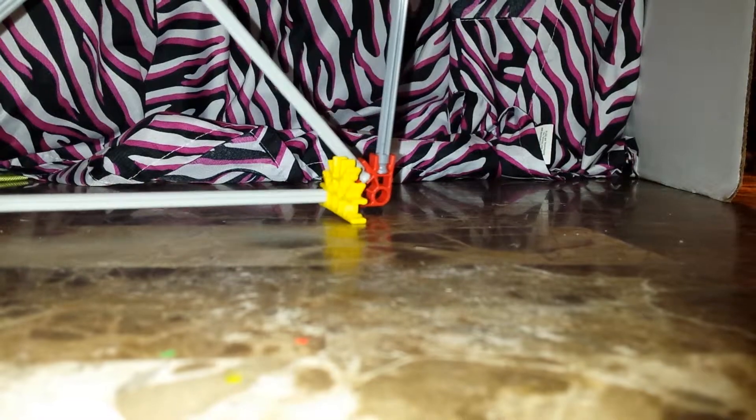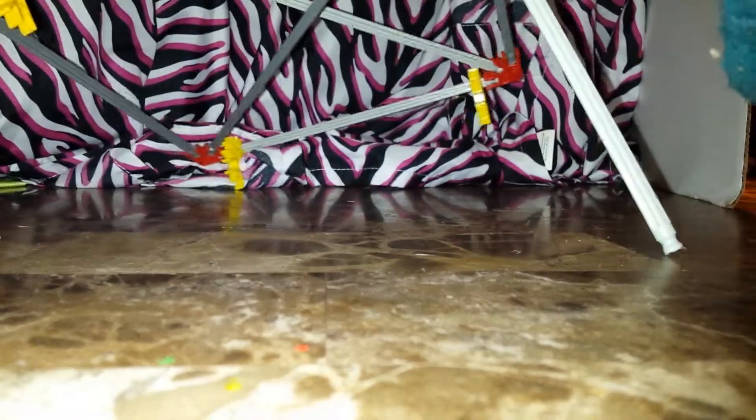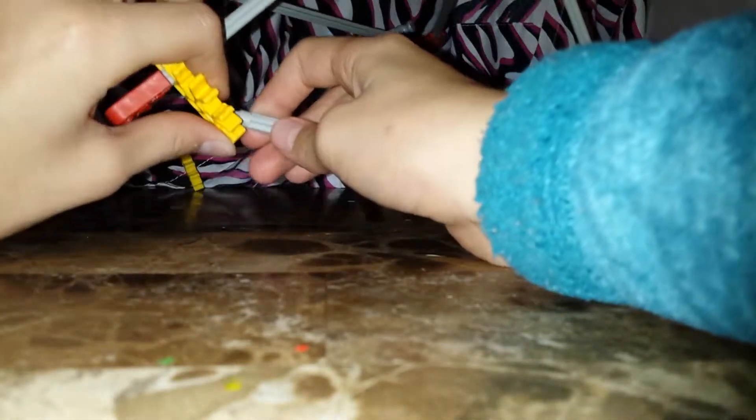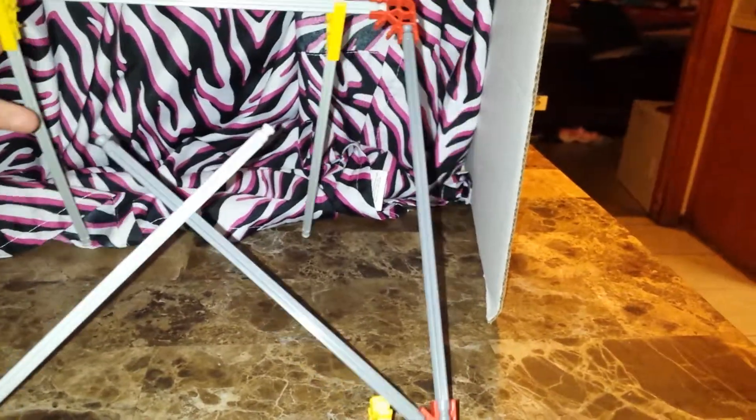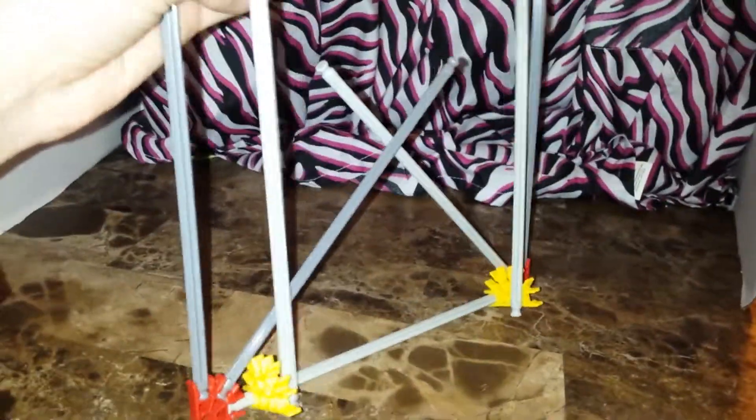And then you take your gray piece and you clip it on like that. Just like that. And then you can make it stand up. You attach these to the yellow piece which is attached to this piece and it makes it move like that.